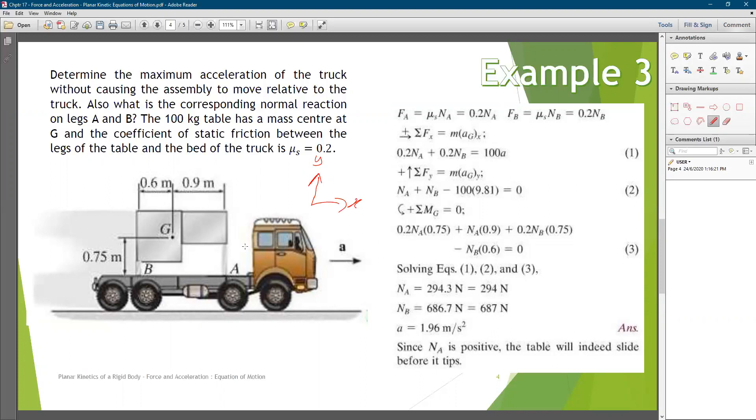What happens is this object here. Here is a 100 kg table. The object here is a 100 kg table and the center of mass is here, G.